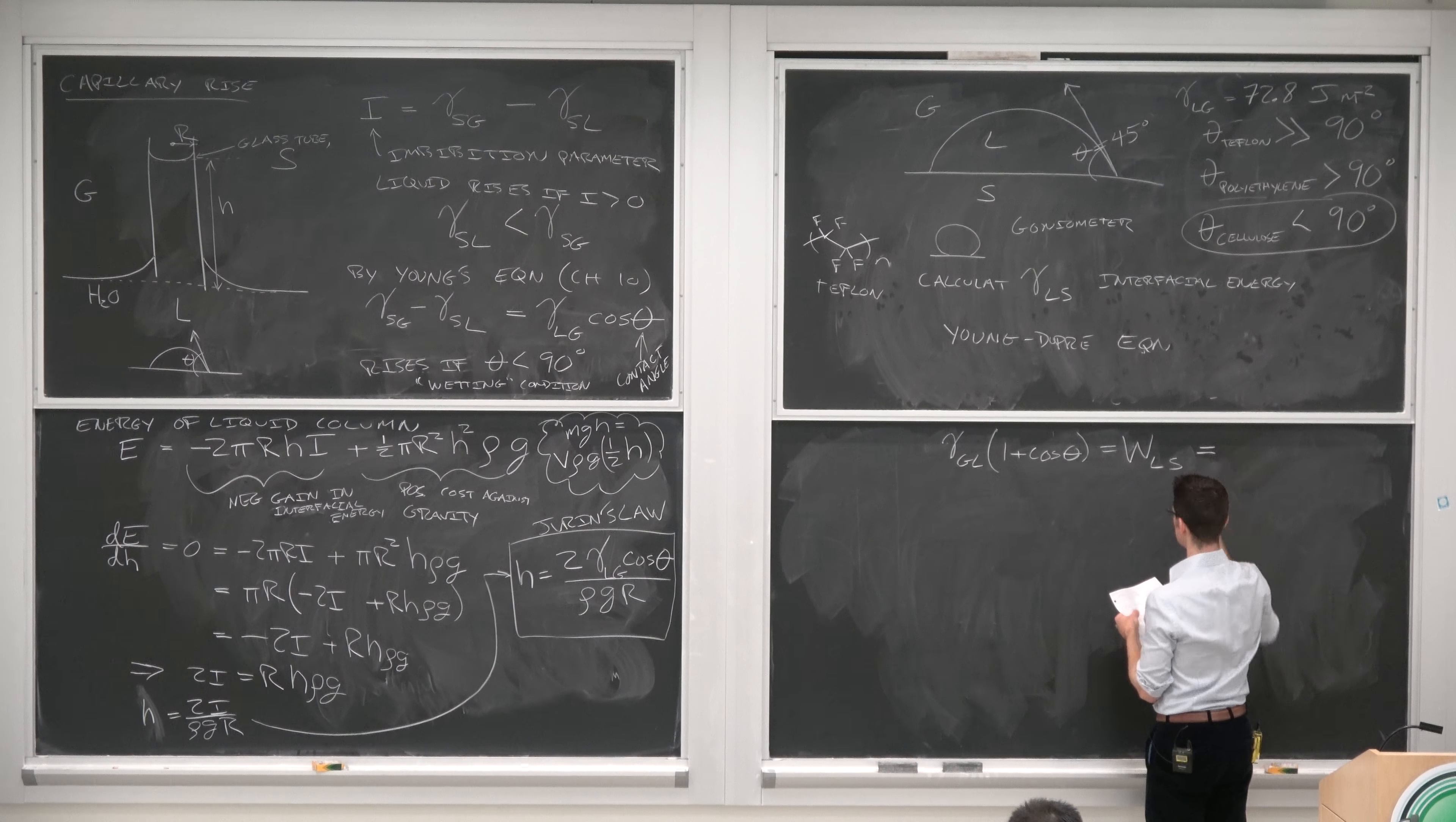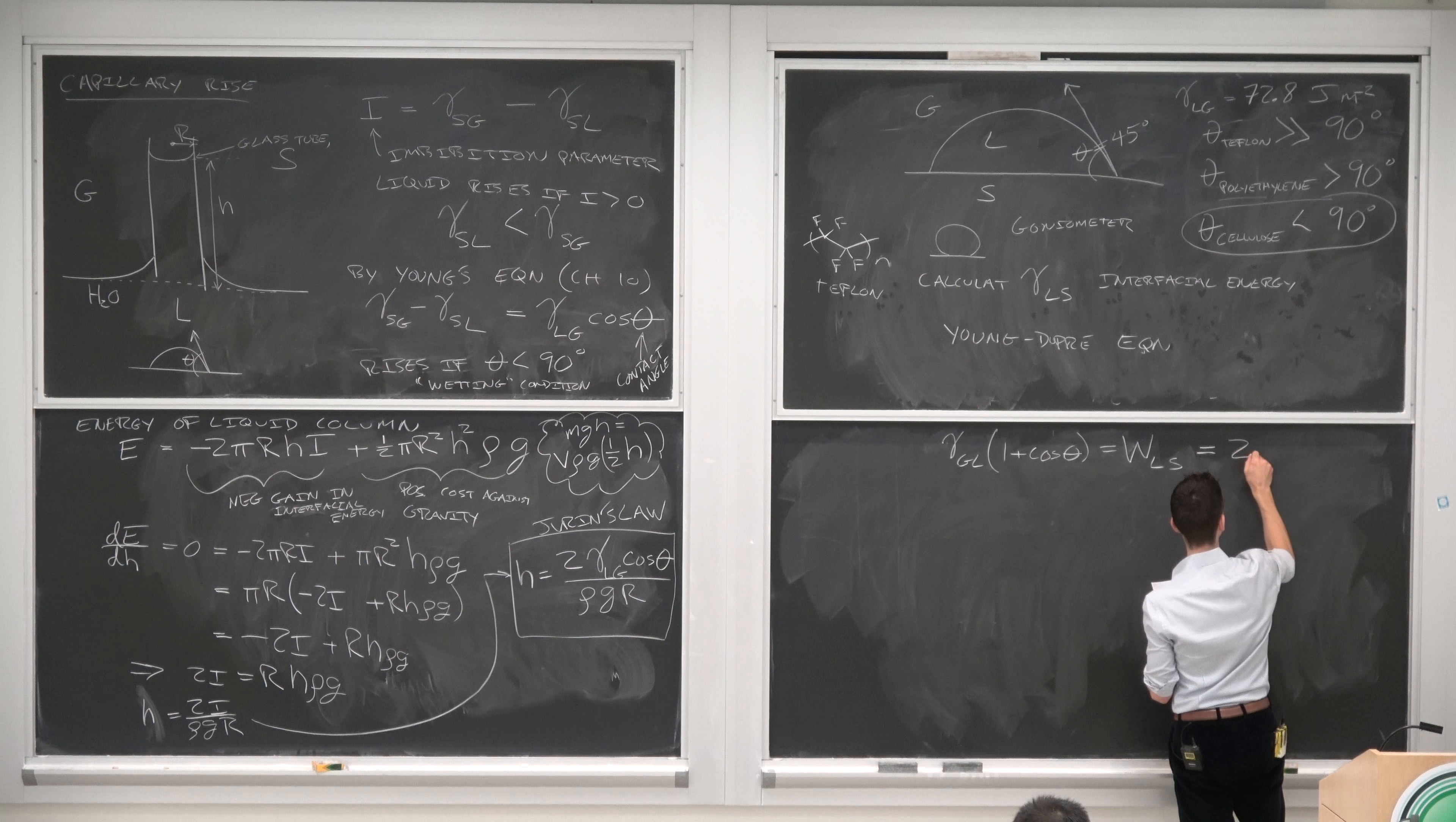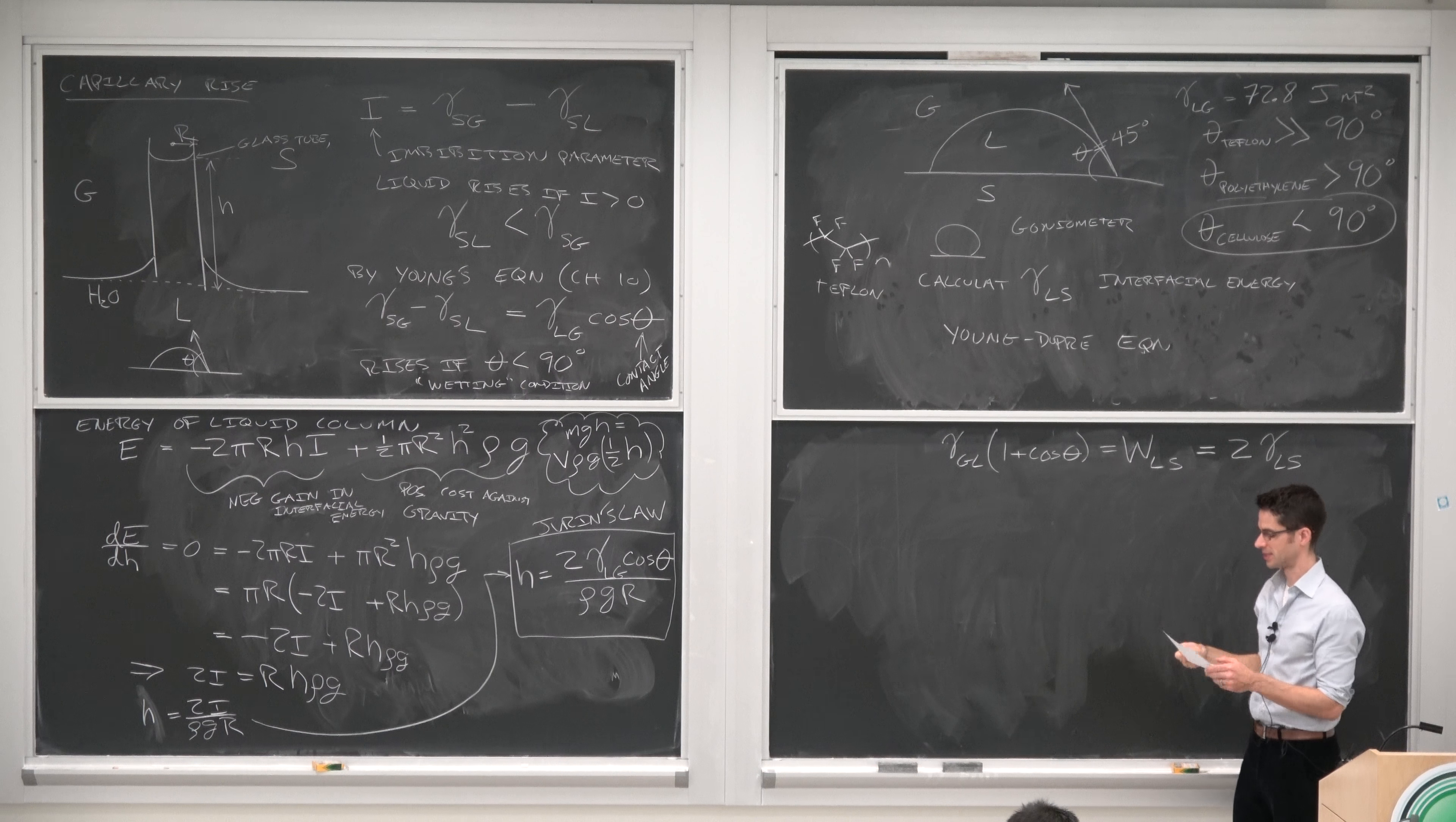So suppose you would use the Young-Dupre equation, which just says that gamma gas-liquid times 1 plus cosine theta equals the work of adhesion between the liquid and the solid. And the relationship between work of adhesion and interfacial energy is a factor of two. So two times the energy of each interface gives you the work that it takes to pull two of those interfaces apart.